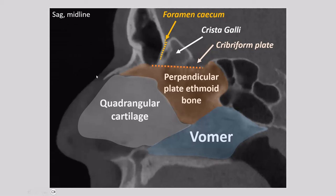What are the drainage pathways of the paranasal sinuses? We have two important ones. The sphenoethmoidal recess is responsible for draining the sphenoid sinuses and the posterior ethmoid cells. The ostiomeatal complex consists of various components: the frontal recess draining the frontal sinuses, the ethmoid bulla draining the anterior ethmoid cells, and the infundibulum draining the maxillary sinuses. Let's illustrate these passageways on imaging.